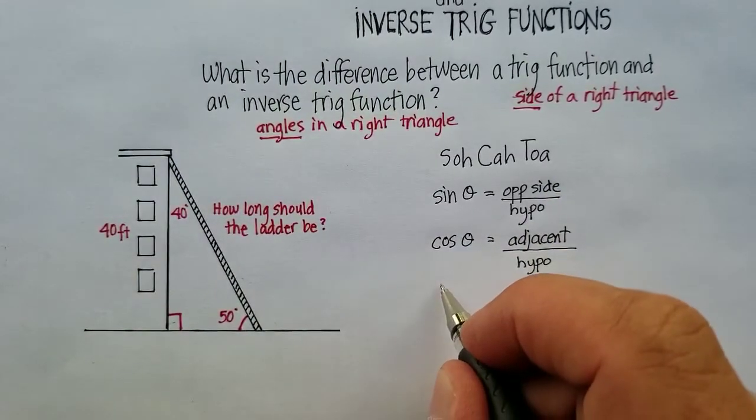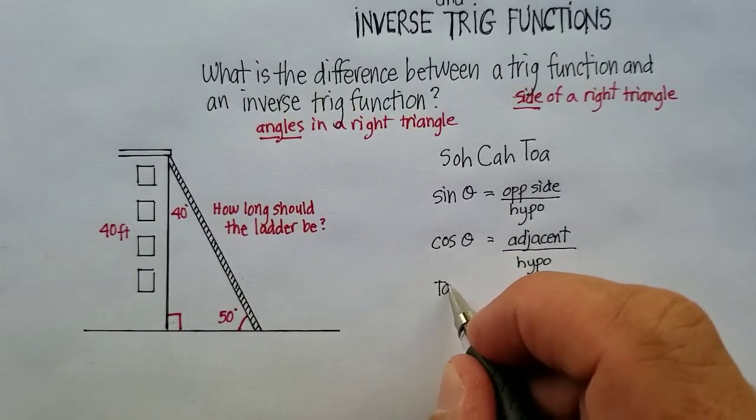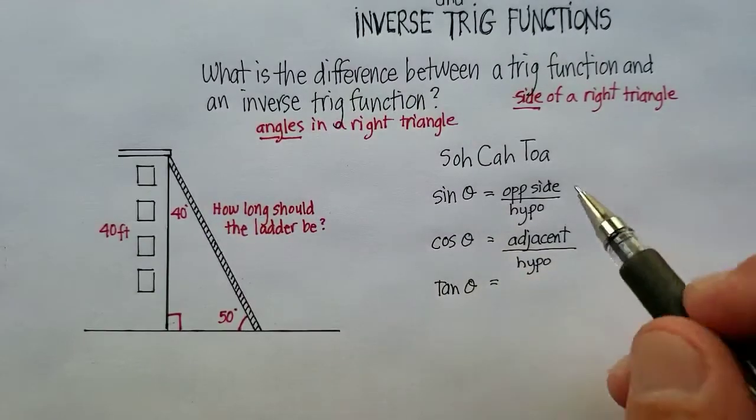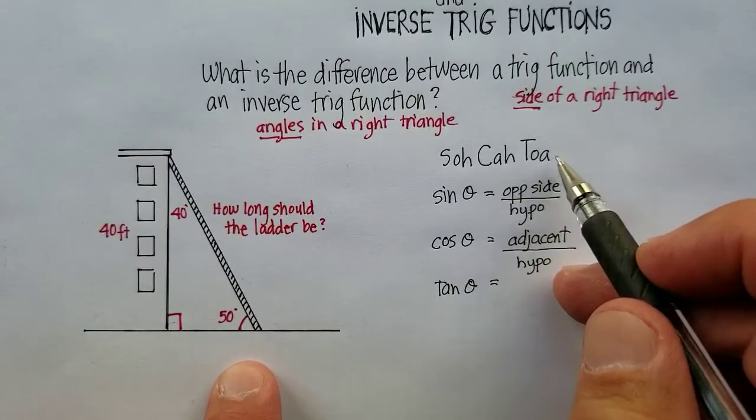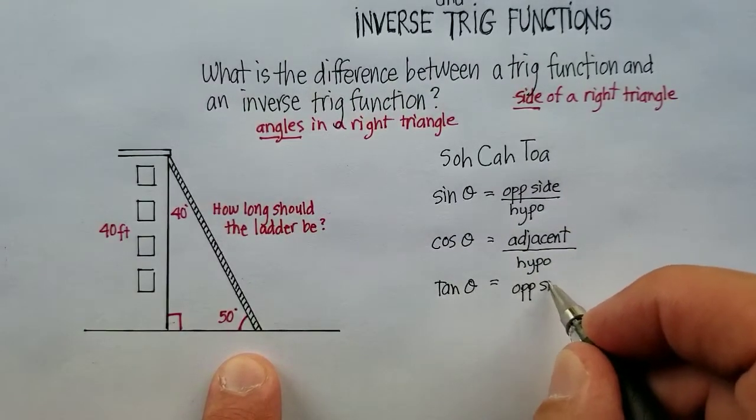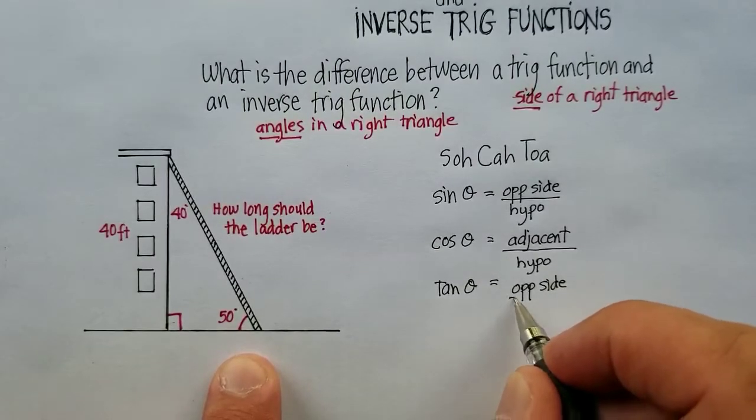And finally, T, or TOA, or tangent of the theta, it would be equal to the opposite side over the adjacent side. So the opposite side over the adjacent side.